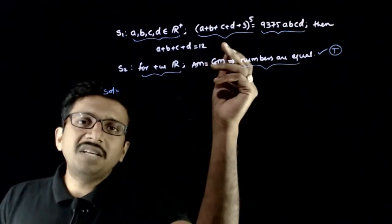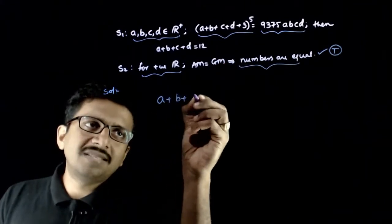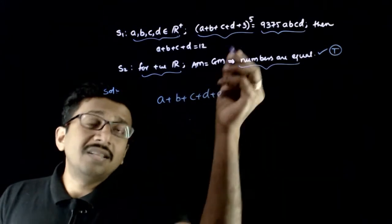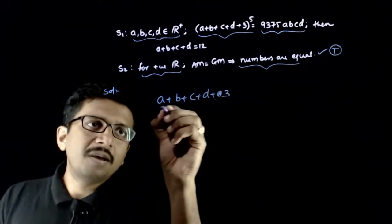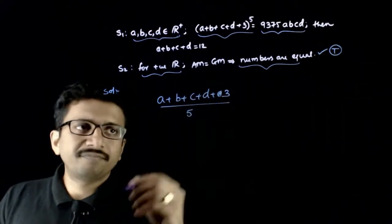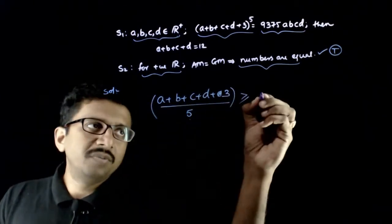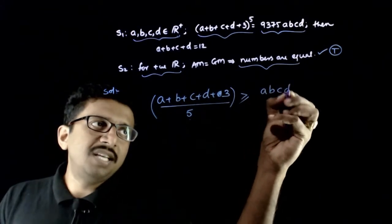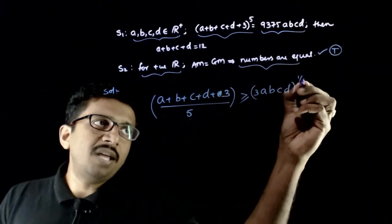If a, b, c, d are positive real numbers, then a plus b plus c plus d plus the fifth number, the fifth number is 3, divided by 5 will always be greater than or equal to a, b, c, d into 3 whole power 1 by 5.